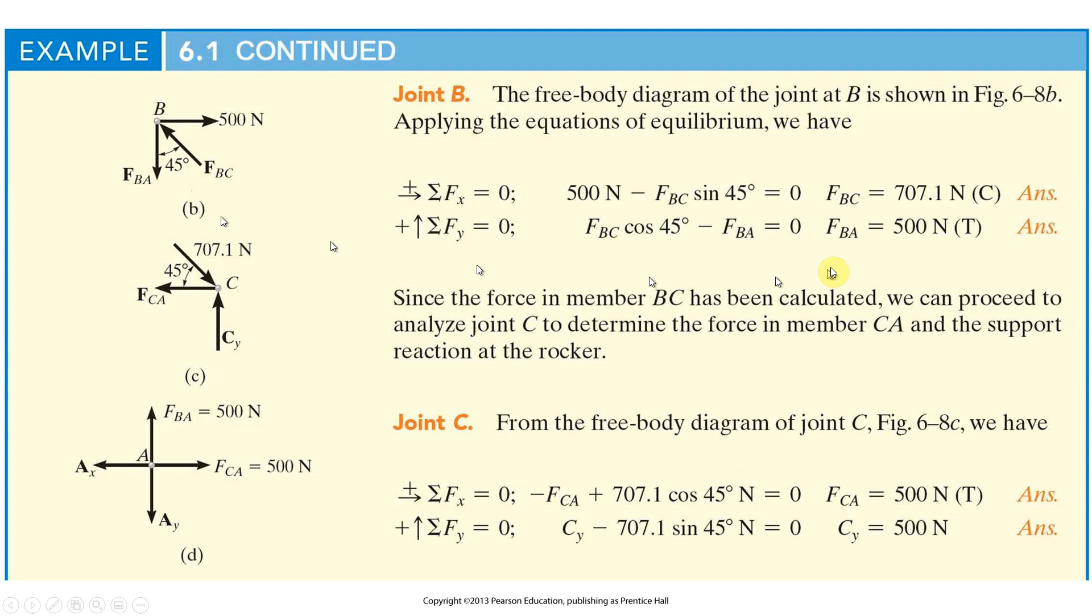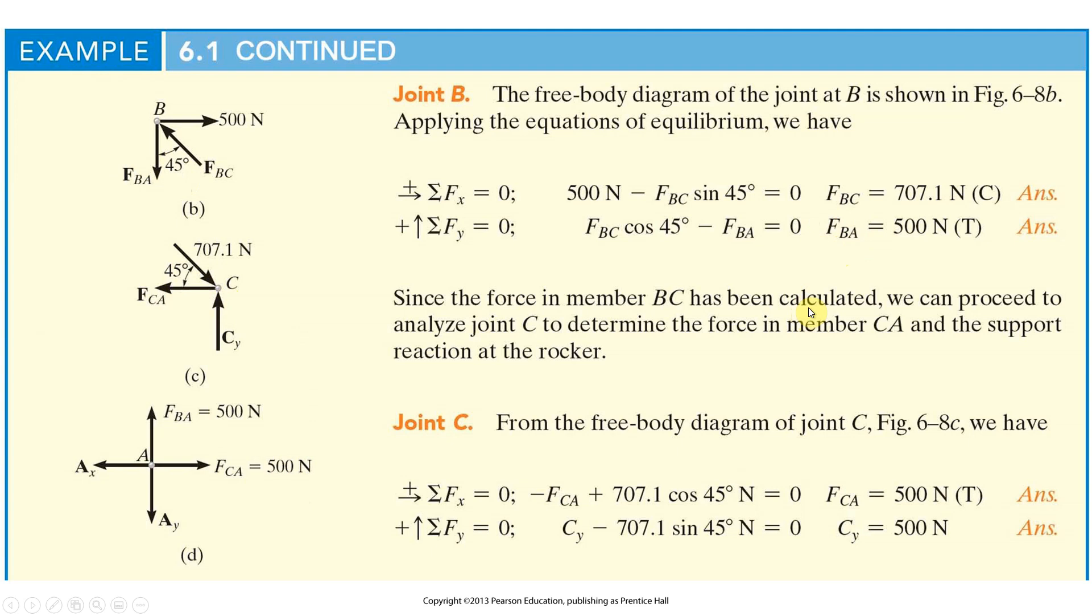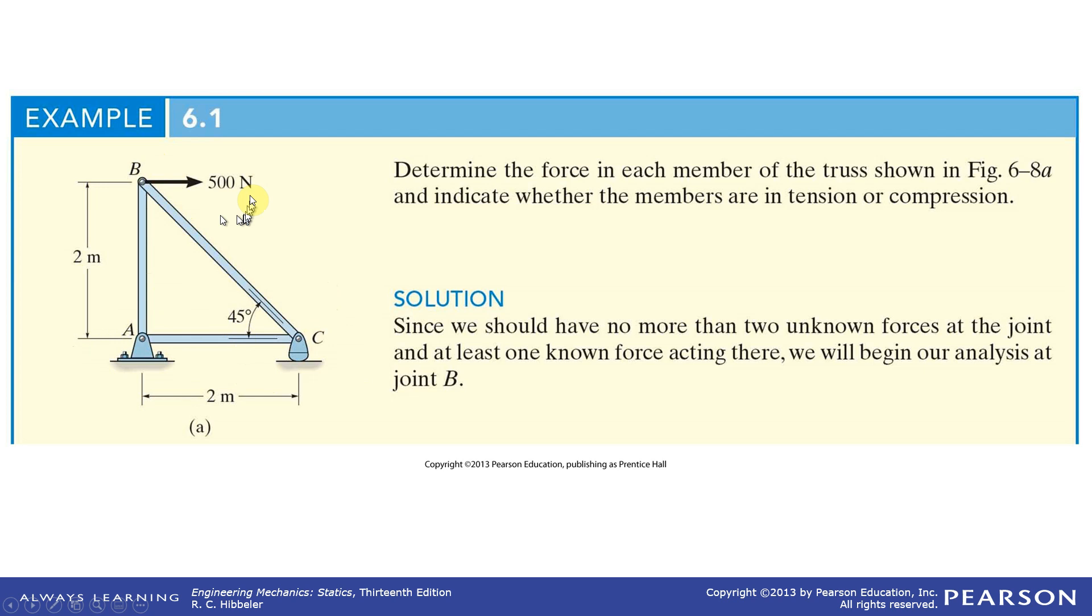That means CY has to be 500 newtons, CA has to be 500 newtons. We've already figured out CB. FBA has to be 500 newtons and we've solved the problem. So this is the principle behind the method of joints. We draw our free body diagram around each joint. We say, okay, let's look at the free body diagram here and the free body diagram here and the free body diagram here. And here's the full blown everything that we're looking at.